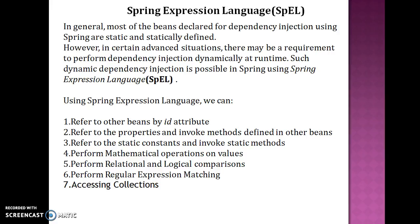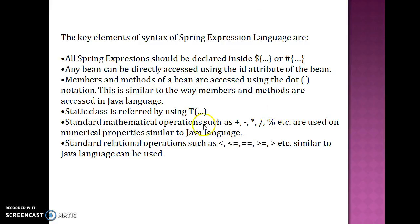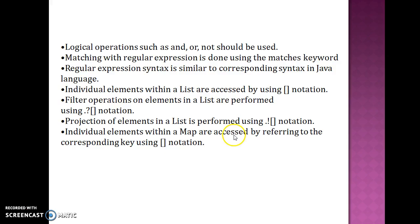When we talk about collections, you may have a list, set, or any kind of map. To access individual elements of a list or set, you use square brackets with the index number. If you want to perform filter operations, you use the question mark with a square bracket notation. For projection — extracting properties from an existing list into another list — you use the exclamation mark with a square bracket operator.